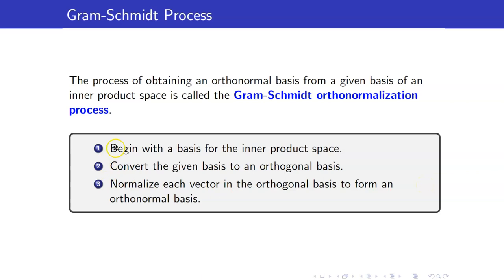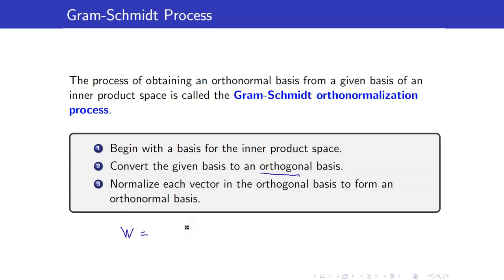This process has three steps. First, we begin with the basis for our inner product space. We then convert it into an orthogonal basis. And the last step is to normalize each vector to form an orthonormal basis. Notice that you can actually stop at step 2 if you just want an orthogonal basis. But the nice thing with having an orthonormal basis is that when we write a vector W as a linear combination of the basis elements, the coefficients will just be the inner product of W with the basis elements. That is why we want to turn our basis into an orthonormal basis.